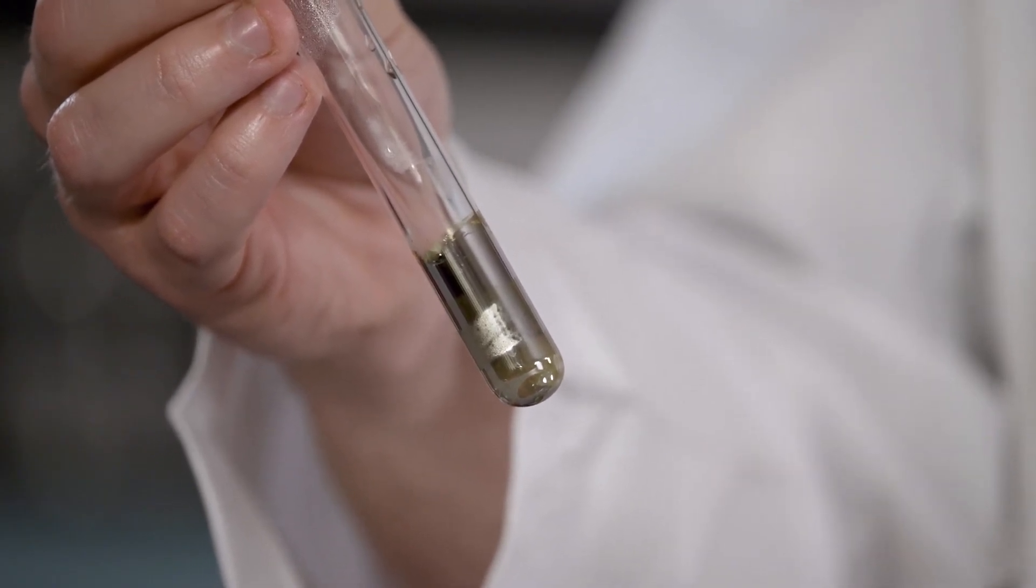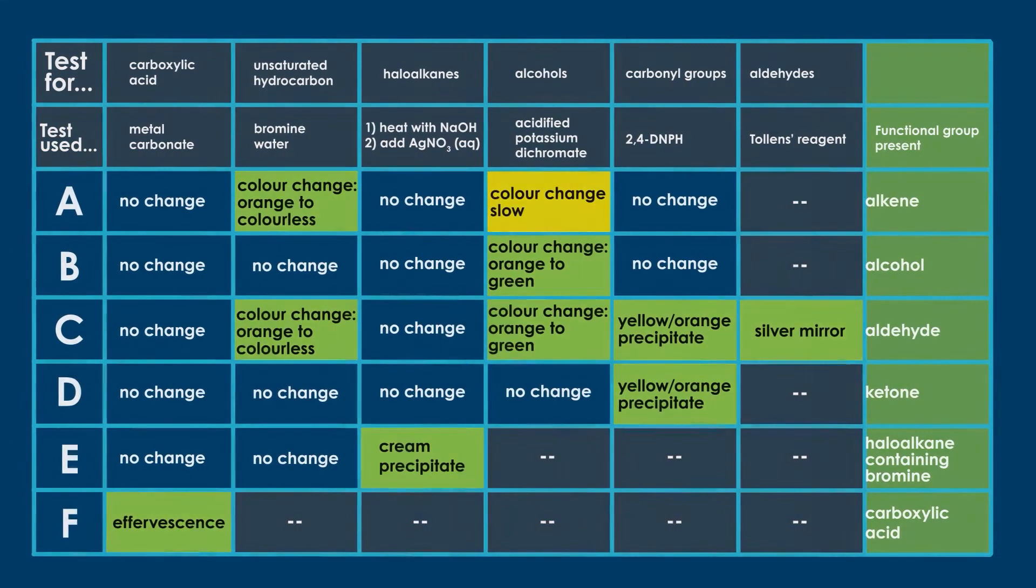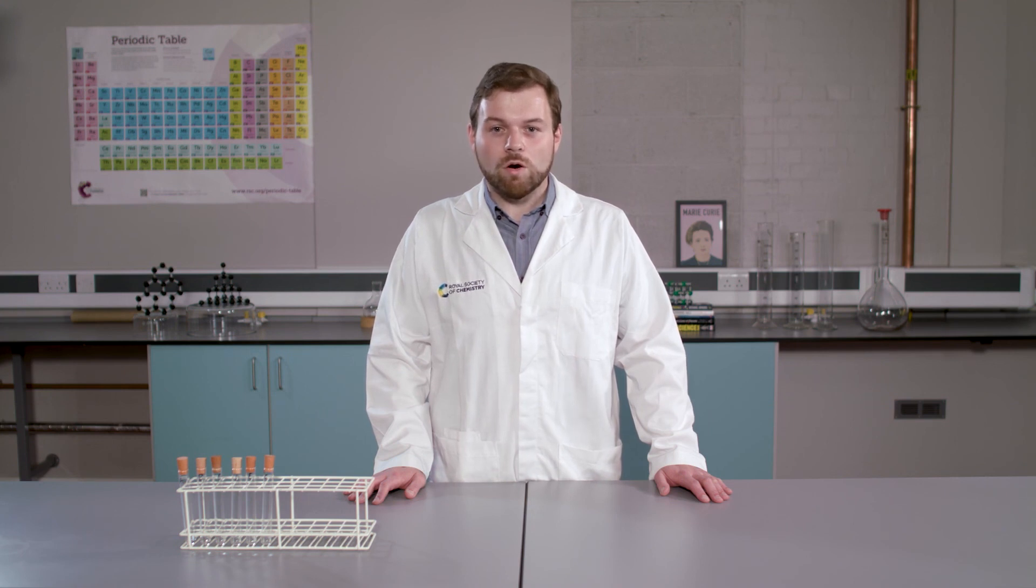That concludes our tests for functional groups. By working through the tests systematically, I have been able to identify which functional groups are present in each of my organic samples. Use the additional resources with this video to explore the underlying chemistry in greater detail, or to plan another investigation to identify the functional groups present in an unknown organic sample. Thank you for watching and have fun with your experiments!